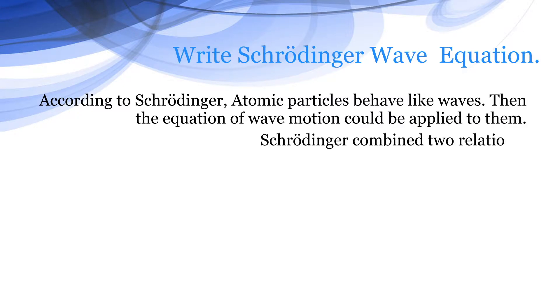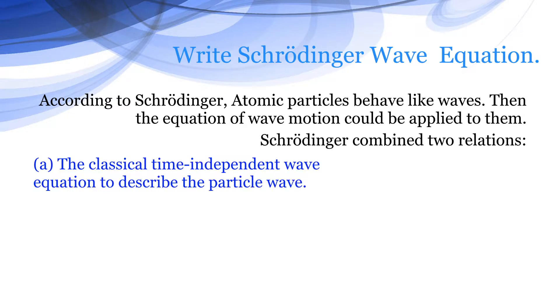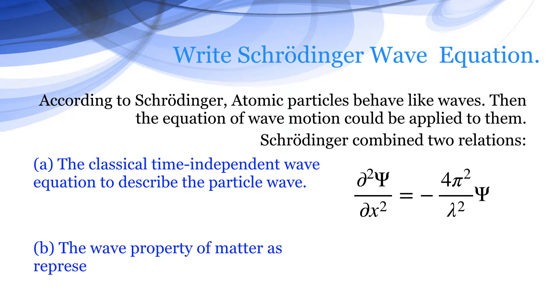Schrödinger combined two relations. First, the classical time-independent wave equation to describe the particle wave: d square psi by dx square is equal to minus 4 pi square by lambda square psi. And second, the wave property of matter as represented by de Broglie's equation: lambda is equal to h by mv.